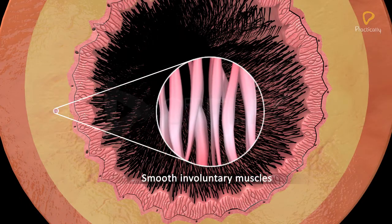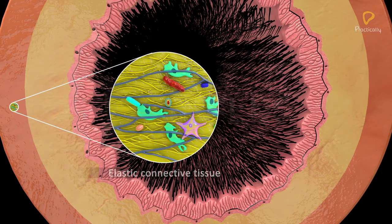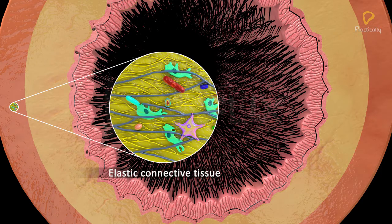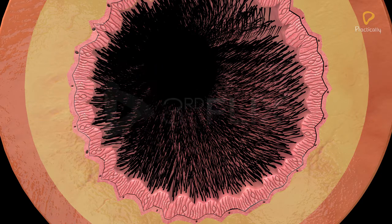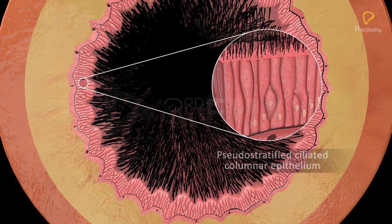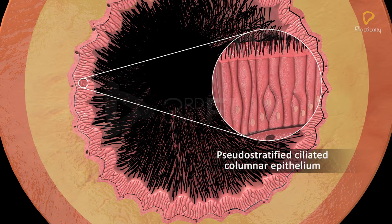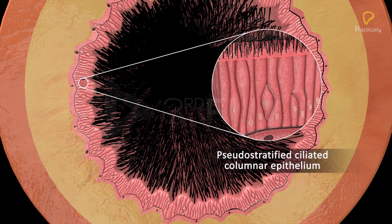Smooth involuntary muscles and elastic connective tissue are also present in the wall of the trachea. The trachea is internally lined by pseudostratified ciliated columnar epithelium.